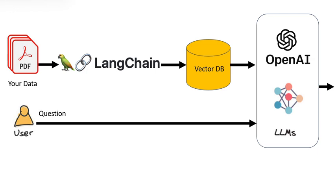Langchain can also take automatic actions based on the generated response. For example, it can call an API of another application to perform an action based on the user query.